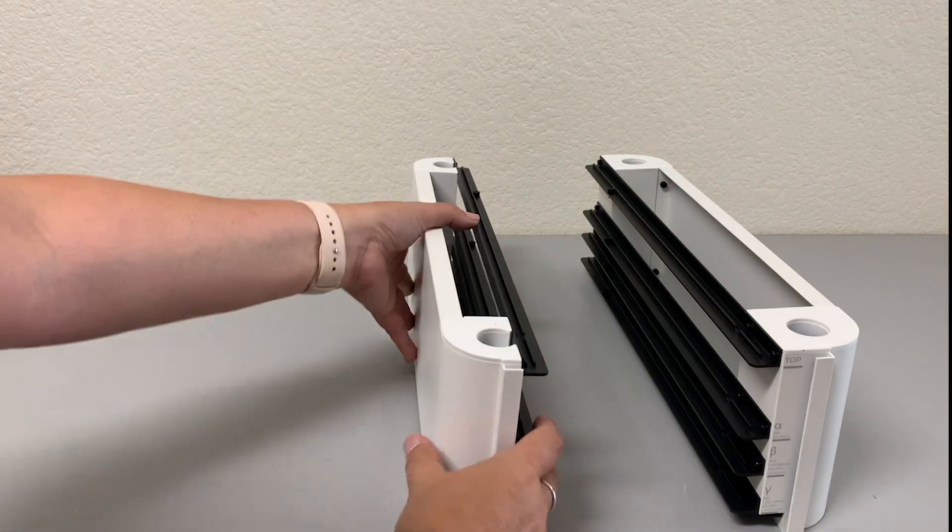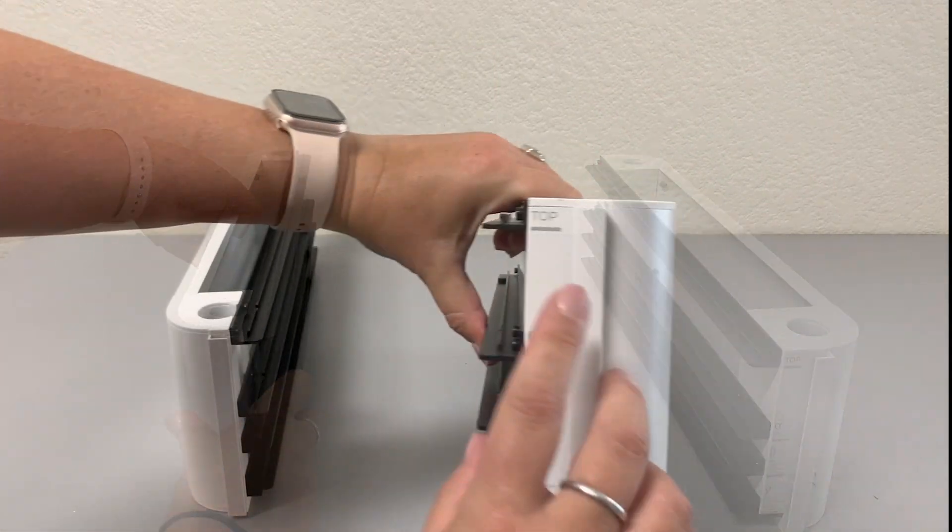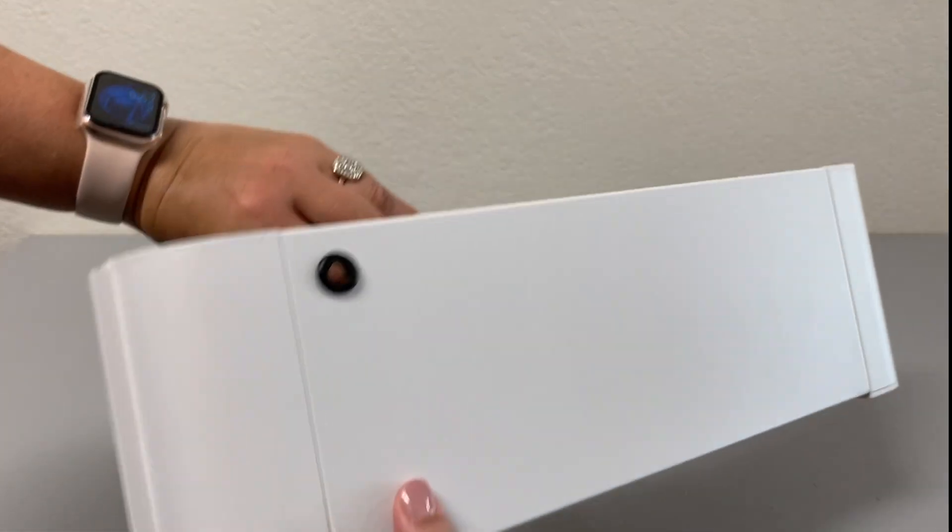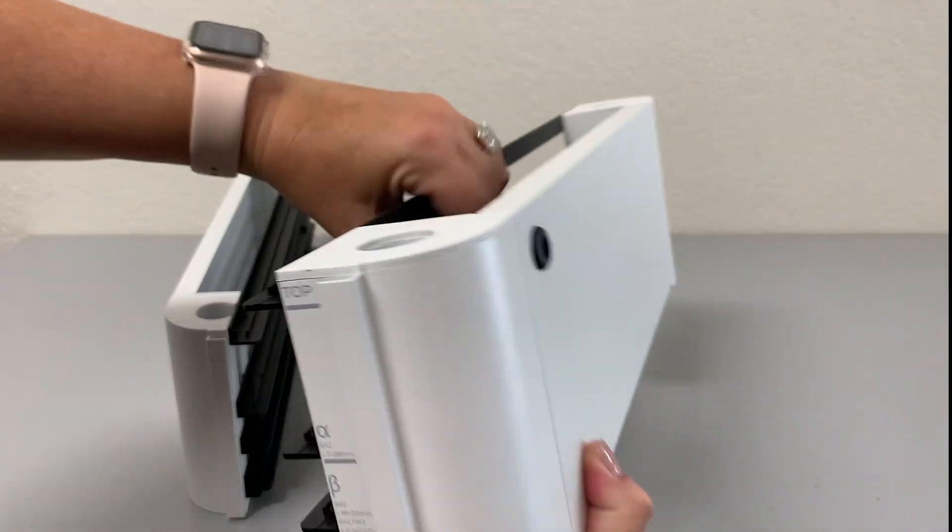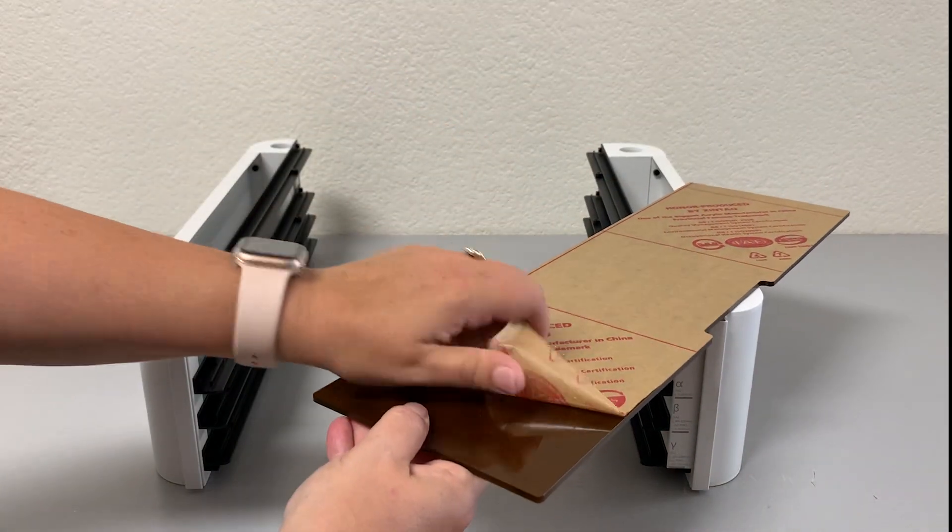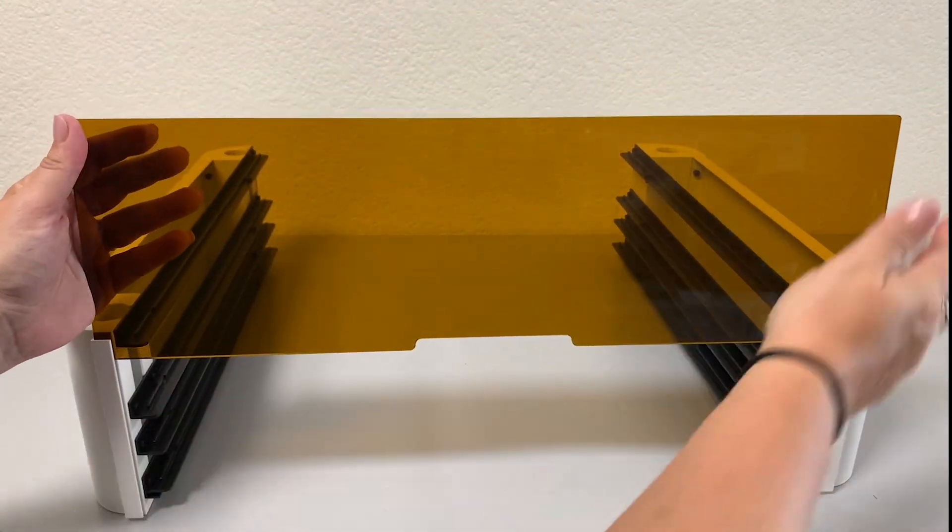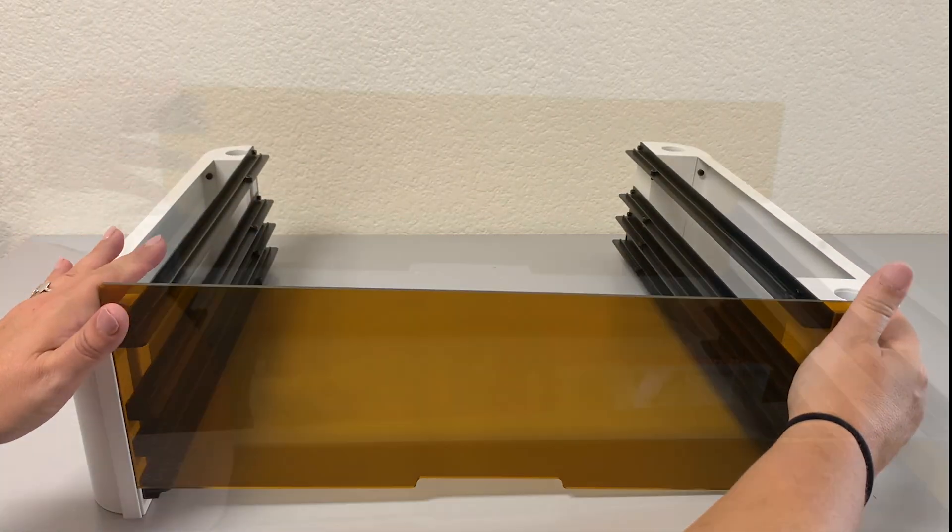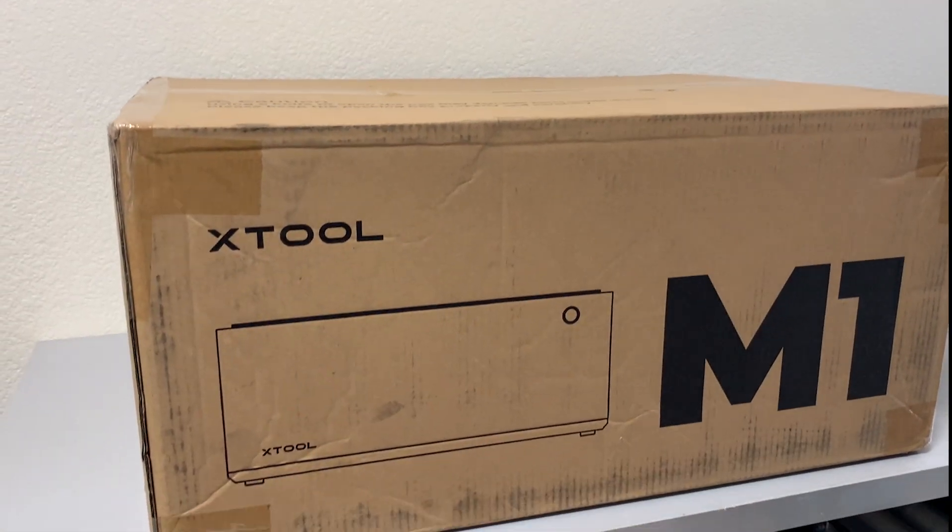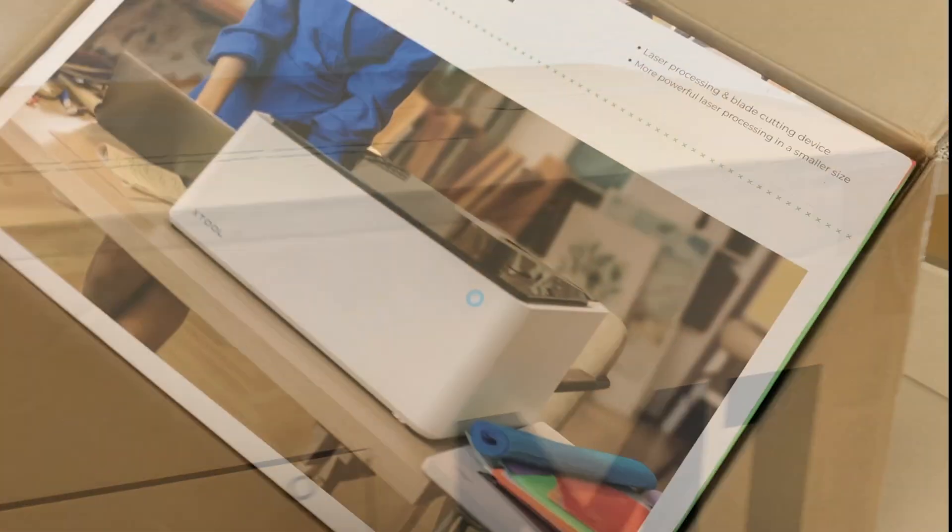This is called the honeycomb riser. It's got two pieces very easy to set up you'll see we do it in about three minutes. We're going to unwrap the enclosed acrylic pieces. Now these are the color they are so that they are eye protected which means when you are cutting something larger and outside of the box your eyes are safe.